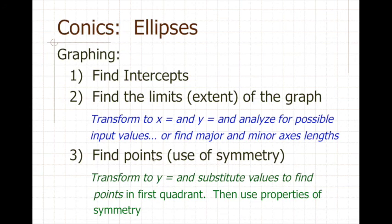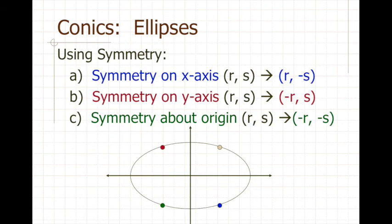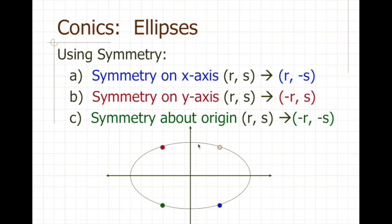The easier approach is to find the lengths of the major and minor axes, since your ellipse must live within the rectangle formed by those lengths. Then find a couple more points and use symmetry. For an ellipse centered at the origin, you can reflect a point through the x-axis, y-axis, or origin to get additional points. If the center is not the origin, you can still use symmetry but through the major and minor axes.